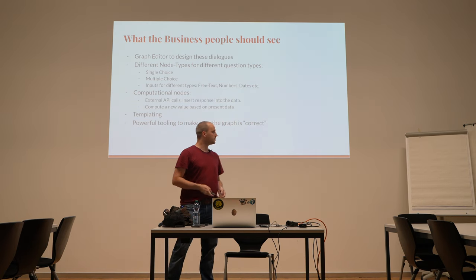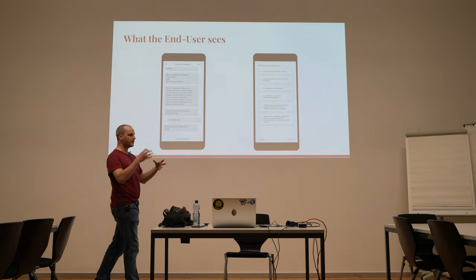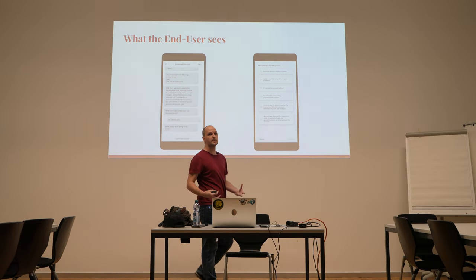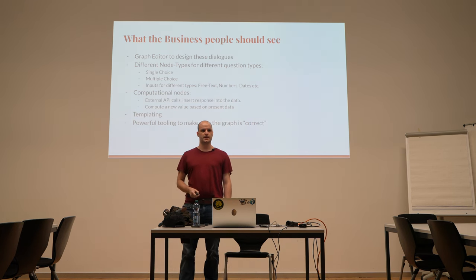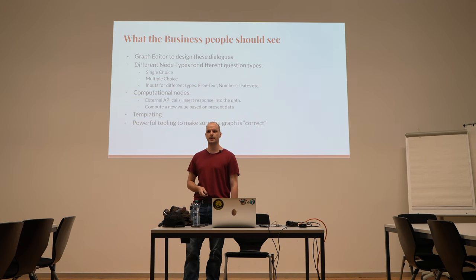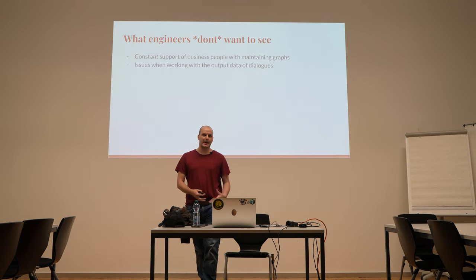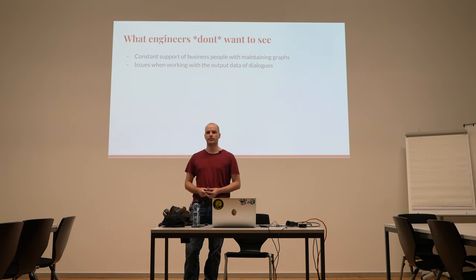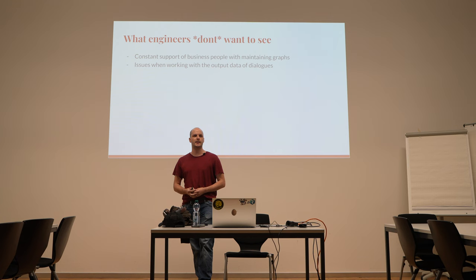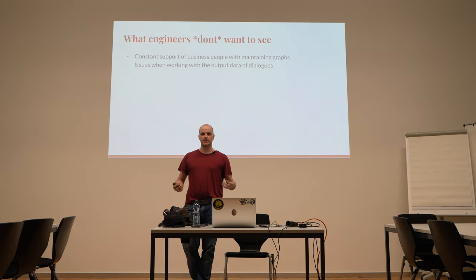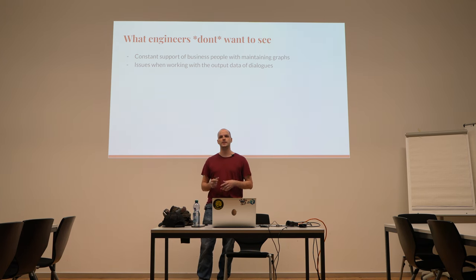Another feature that has to be supported is templating — sometimes you have data in your structure that you want to insert into text. The whole point of my master's thesis is then: how do you make this not crash? How do you make this correct? The motivation is that we, as backend engineers, don't want to constantly support the business people. There are certain classes of errors that programmers are intimately familiar with — type errors, non-exhaustive matches, and all these kinds of things — and it turns out they have corresponding properties in these graphs. So why not have something like a compiler that figures those things out for us?